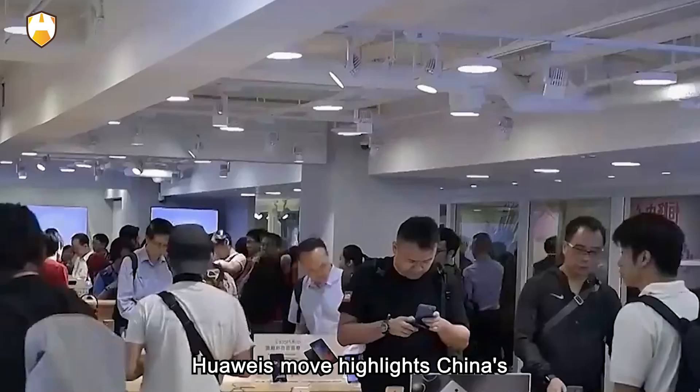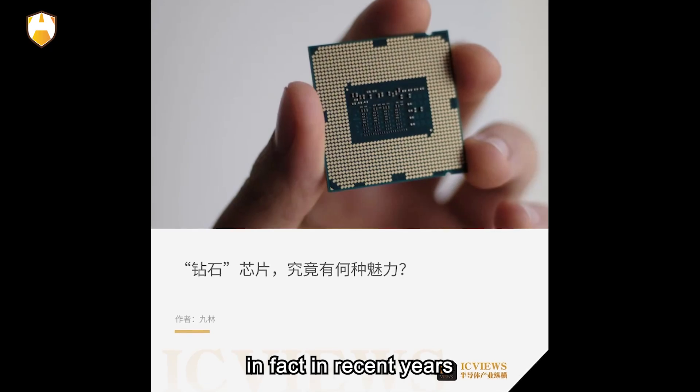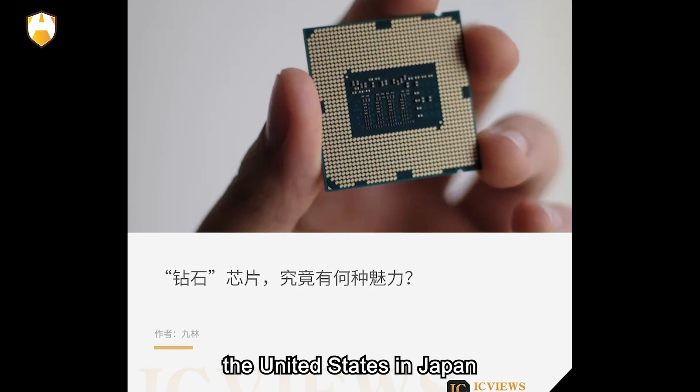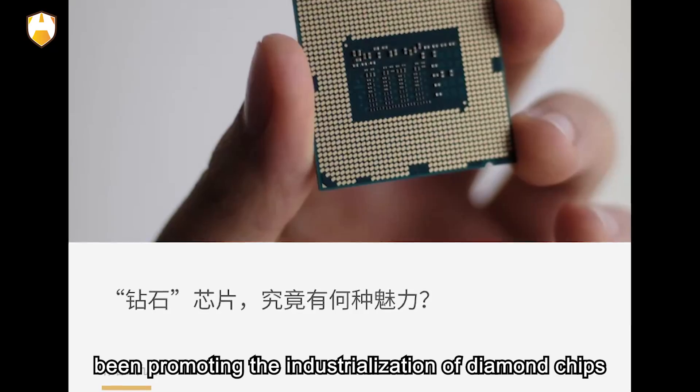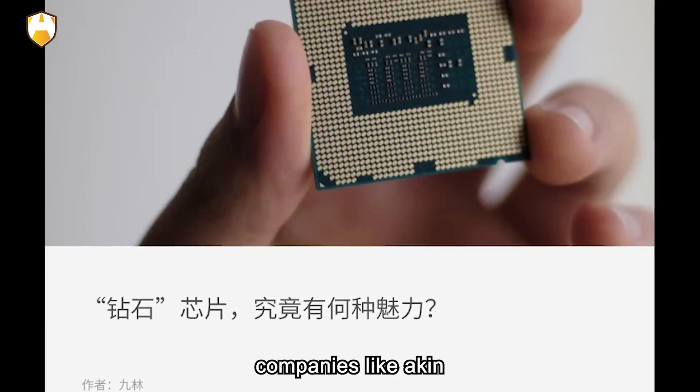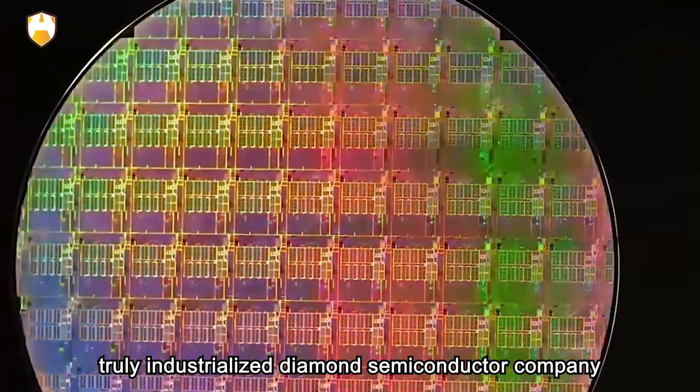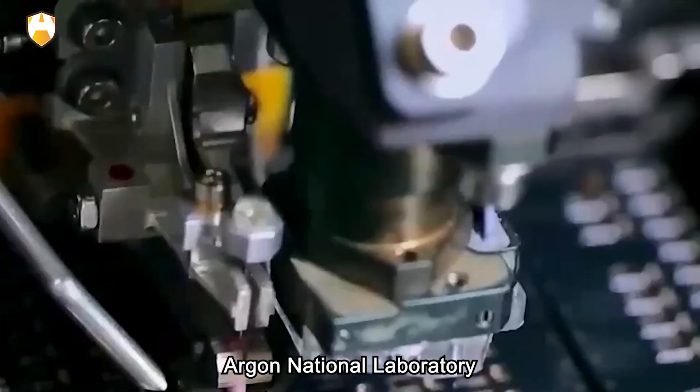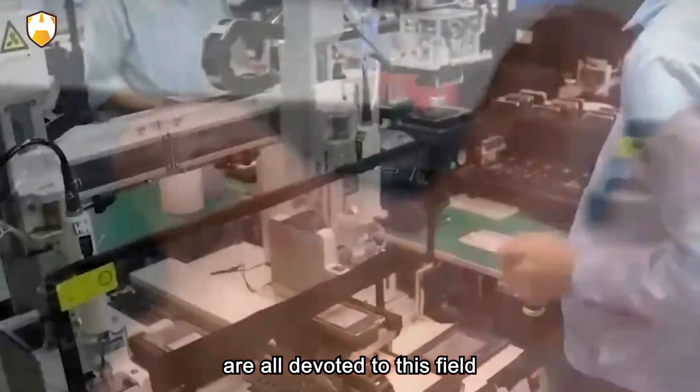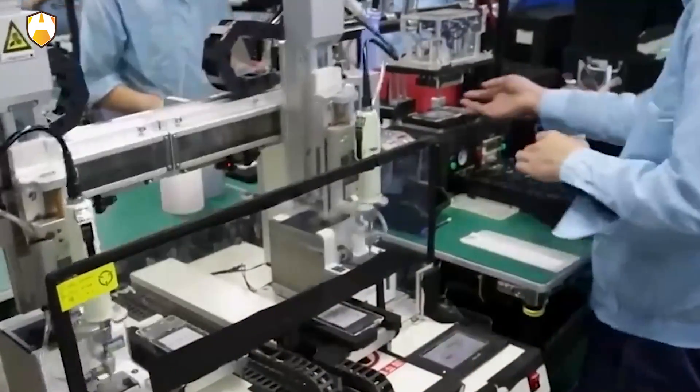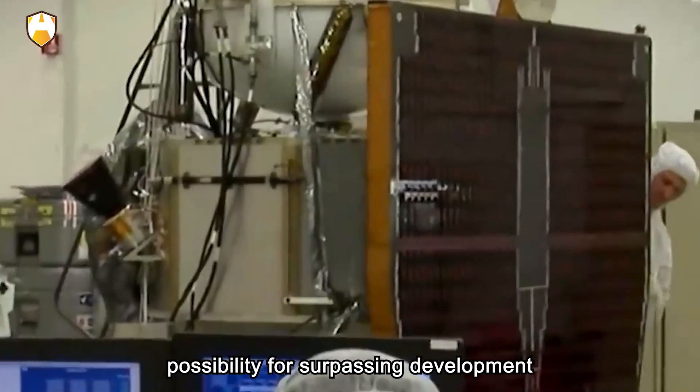Huawei's move highlights China's emphasis on the development of diamond chips. In fact, in recent years, the United States and Japan have also been promoting the industrialization of diamond chips. Companies like Akin, the world's first truly industrialized diamond semiconductor company in the United States, Argonne National Laboratory, as well as NTT and NIMS in Japan, are all devoted to this field. This shows that countries are striving to seize every possibility for surpassing development.